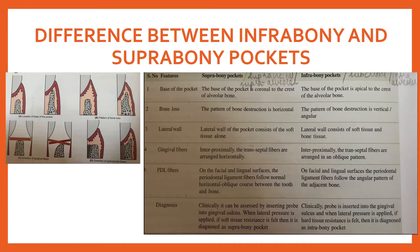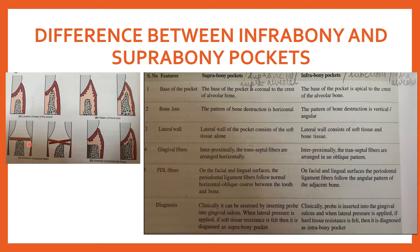The differences between infra-bony and supra-bony pockets: In supra-bony, the base of the pocket is coronal to the crest of the alveolar bone; in infra-bony, it is apical to the crest. The pattern of bone destruction in supra-bony is horizontal, but in infra-bony it is vertical or angular. The lateral wall of supra-bony consists of soft tissue alone; in infra-bony the lateral wall consists of both soft tissue and bone tissue. Interproximally, transeptal fibers are arranged horizontally in supra-bony but in oblique pattern in infra-bony.